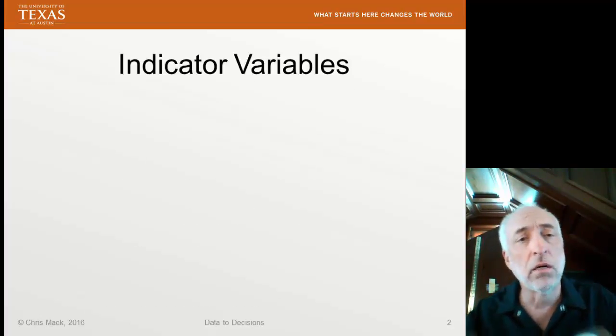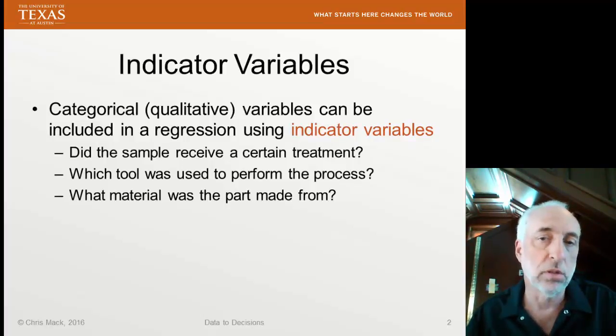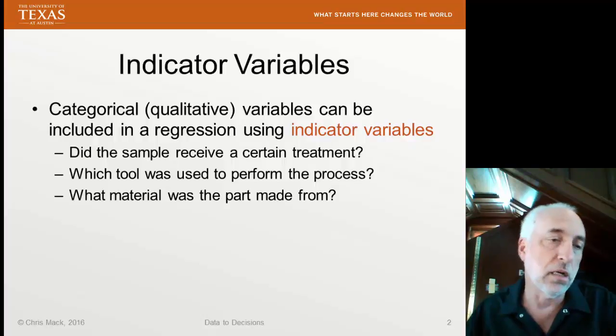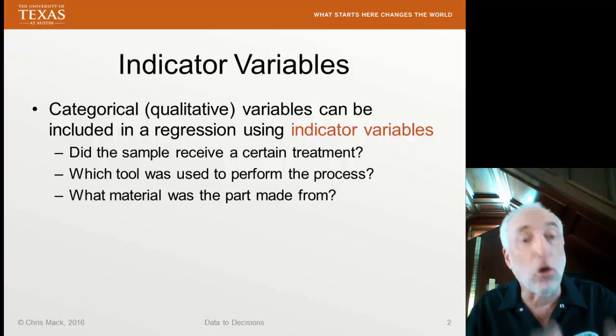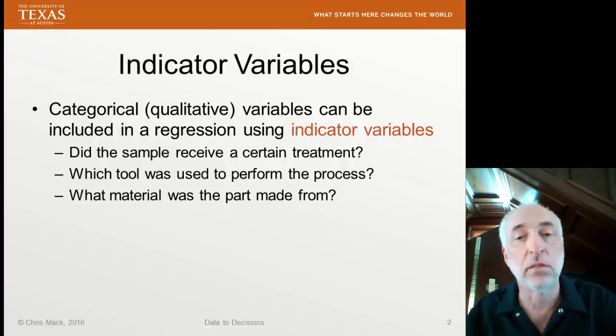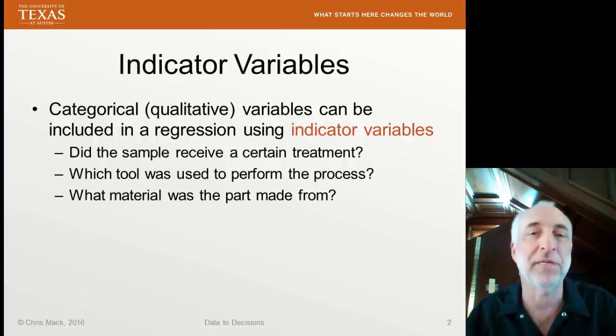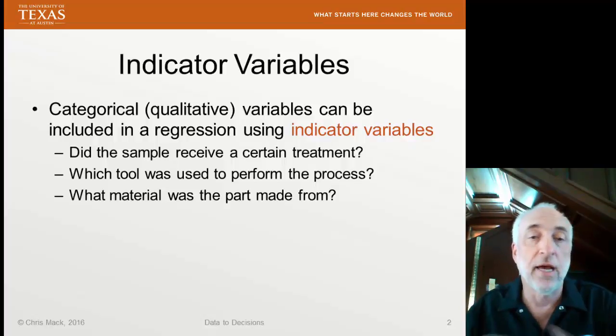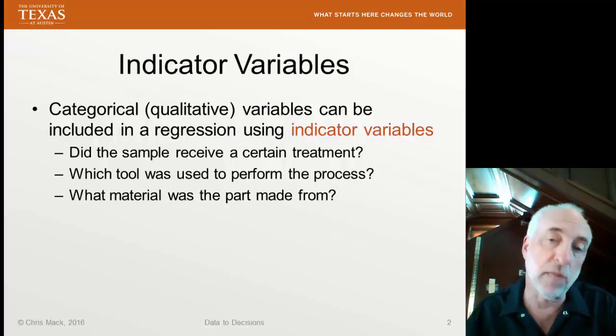Indicator variables are important ways of dealing with categorical variables. Categorical or qualitative variables are variables that can be expressed as belonging to certain discrete, non-overlapping categories. For example, did the sample receive a certain treatment? Yes or no. Which tool was used to perform the process? Maybe there's tools A and B, or tools A, B, or C. What material was this part made from?